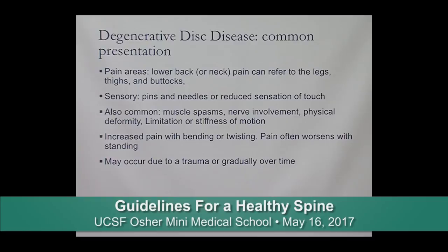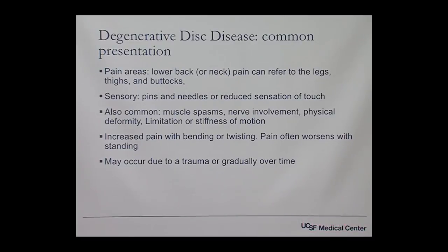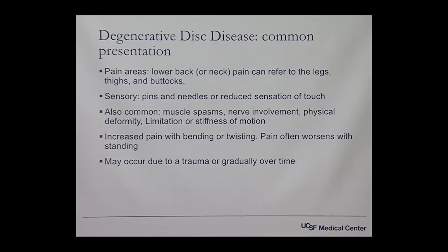Other common findings within this group can be muscle spasms and nerve involvement. There can be changes to the spine — we would refer to that as spinal deformity or an asymmetry within the spine. Patients often discuss feeling limited or stiff within their motions. Bending and twisting can be aggravatory, and pain is often worsened with prolonged standing. The occurrence can be through an aging-related process or it can be from a direct trauma as well.